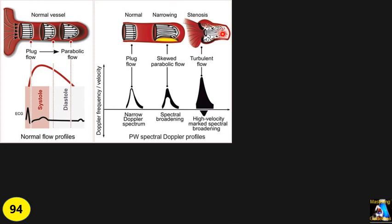In turbulence, we have chaotic blood flow with different directions and different velocities. If we do Doppler on plug flow, it gives a very narrow, linear, spectral profile — we call this a spectral window, sharp and clear. A slight change gives a slightly thicker profile but still shows a window or empty Doppler inside — called spectral broadening. If it is chaotic and turbulent, it gives you complete broadening and a full spectral.